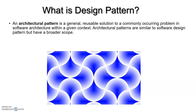As per Wikipedia, the definition is: an architectural pattern is a general, reusable solution to a commonly occurring problem in software architecture. In your day-to-day programming you might be facing some issues. To solve those issues you follow a particular pattern, and that same pattern can be applied to similar problems in other projects as well.